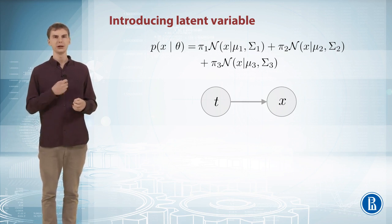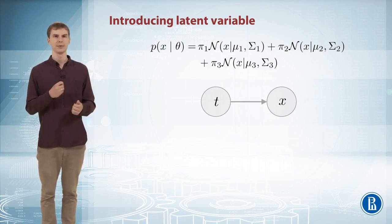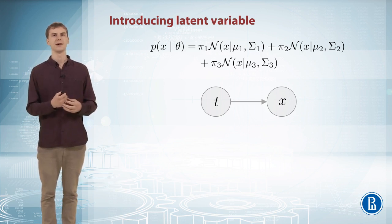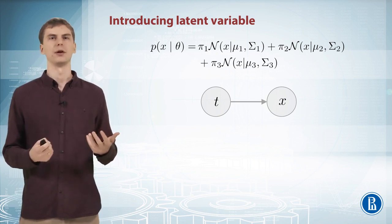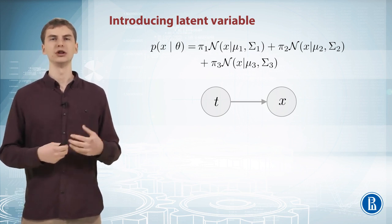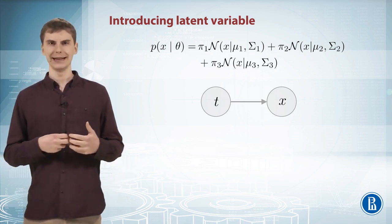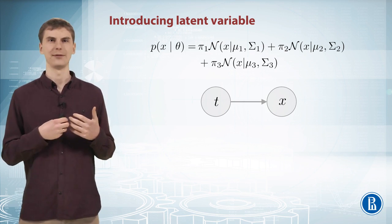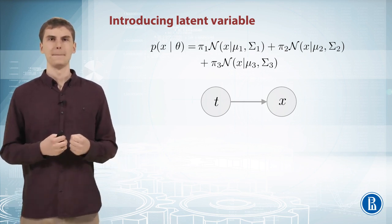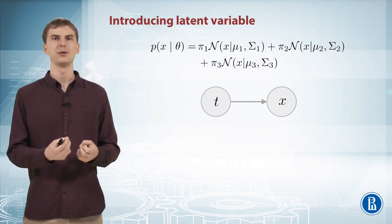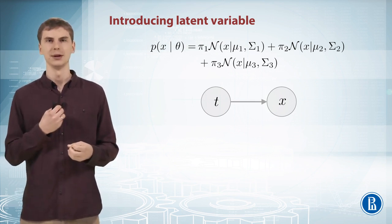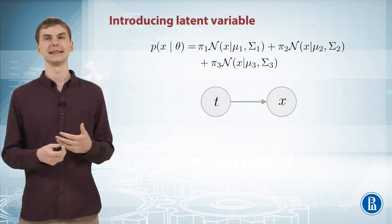The reasonable thing to assume about t here is that it takes three values, one to three, and it shows us from which Gaussian this particular data point came from. We actually don't know for any data point which Gaussian it came from, so it's a latent variable. We don't observe this because it's never known — neither in training nor in testing.